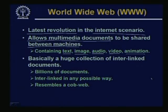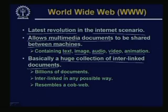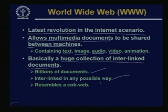What this world wide web actually is — it is basically a huge collection of documents which are interlinked. Interlinked means one document is linked to some other document, which may be linked to yet another document. There can be links between one document and another; when you click a link you go to some other document. There are billions of such documents linked in all arbitrary possible ways, and since there is a very complicated interconnection using these links, they resemble a cobweb — and from that cobweb the term 'world wide web' has come.